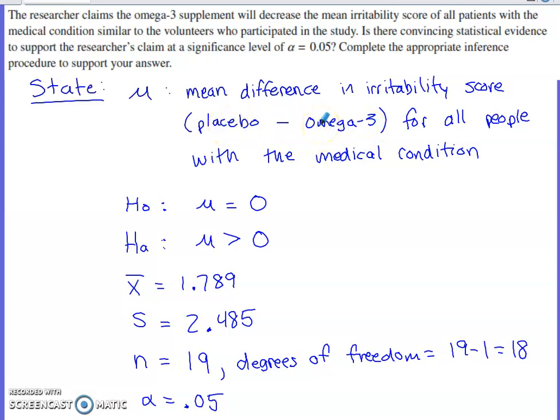Placebo minus omega-3. Well, if they were more irritable when they took the placebo than they were when they took the omega-3, this number right here should be the higher of these two values, and that would mean that our mean difference is going to be positive. So that would be our alternative.